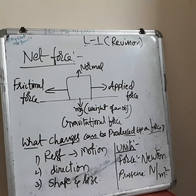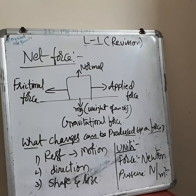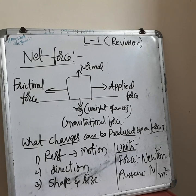Net force is the total force acting on a body. When you place an object on a leveled surface, four forces act on it: frictional force and applied force along the x-axis, and normal force acting upward and the weight of the object acting downward along the y-axis. Net force is the total of forces along both the x-axis and y-axis.